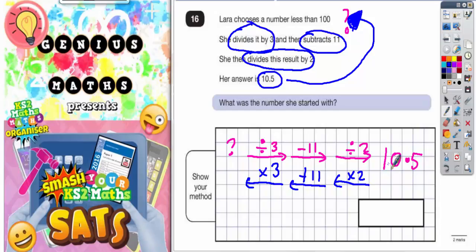So let's work that out. 10.5 times 2 - we're doubling it. Double 10 is 20 and double 0.5 is 1. Put the two together, you get 21. So double 10.5 is 21.